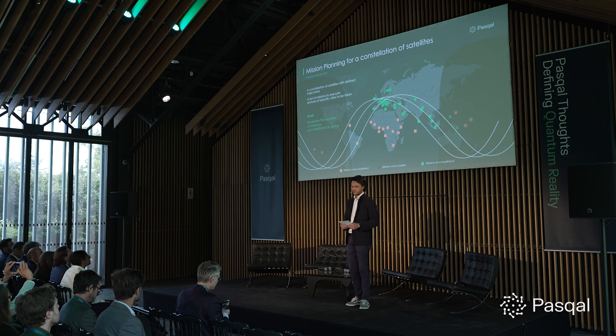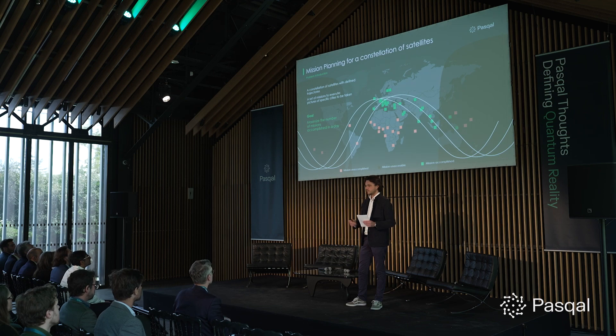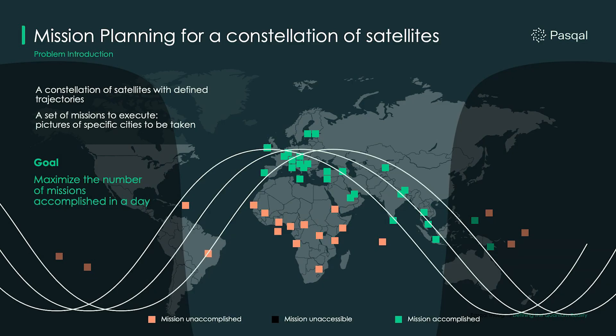A given number of observations are requested by clients, and the problem we're trying to solve is to maximize the number of observations made in a single day by the entire fleet of satellites. The objective of this project is planning the movements of the observation instruments on multiple satellites during the day, while respecting a few constraints related to each satellite and its environment.